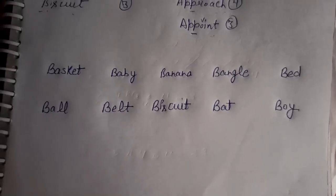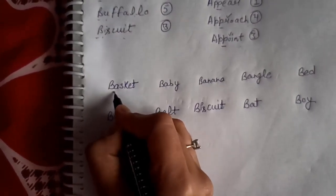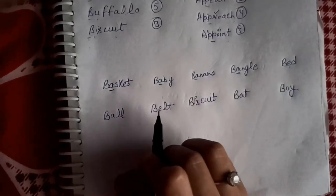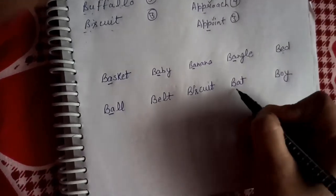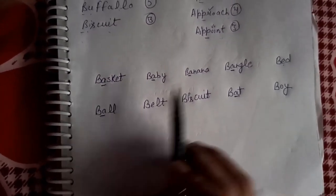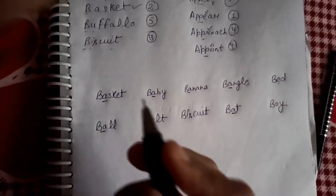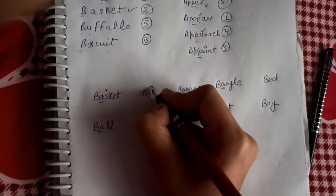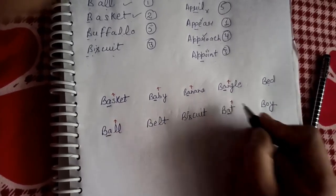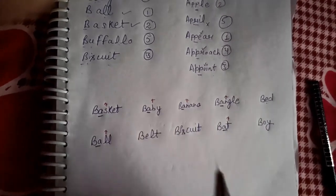All these words start with B, so we will not consider the first letter. Looking at the second letter of each word, we can see many have A as the second letter, while one has E. A comes first, so we consider those words first. Now among the words with A as the second letter, we look at the third letter: S, B, N, N, L, and T. B comes first in alphabetical order.